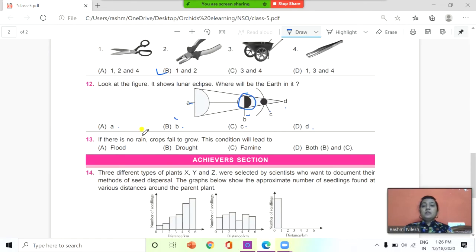Next, if there is no rain, crops fail to grow. This condition will lead to option A: flood, draft, famine, and both B and C. And the answer is D, both B and C, draft and famine.